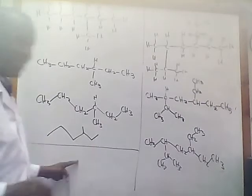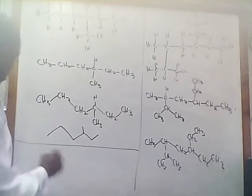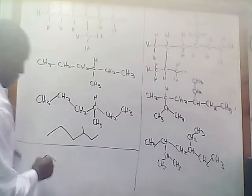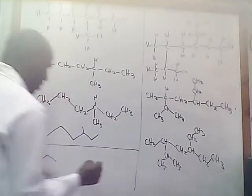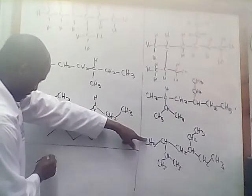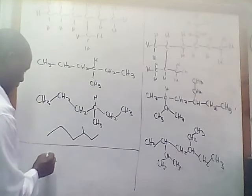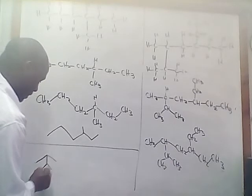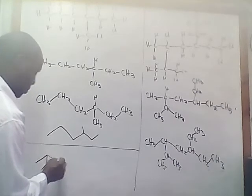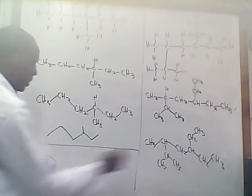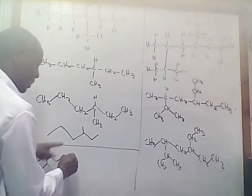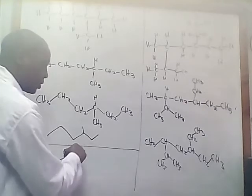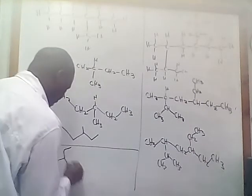Let me draw this structure down here so it can be clearer. This will be: CH3, then CH — meaning there is a carbon with a hydrogen — then I put a CH3 and a CH3. Then there is a carbon, so that is CH2, then there is another carbon with CH2 and CH3, then there is a CH2 and CH3.